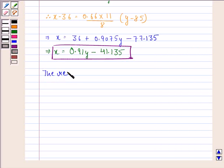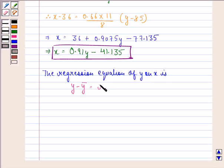Now, the regression equation of y on x is y minus y bar is equal to r into sigma y upon sigma x into x minus x bar.